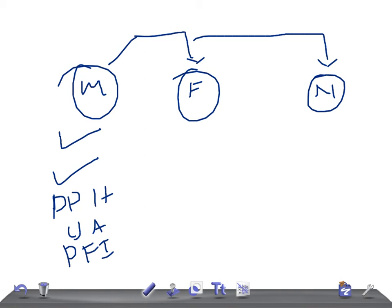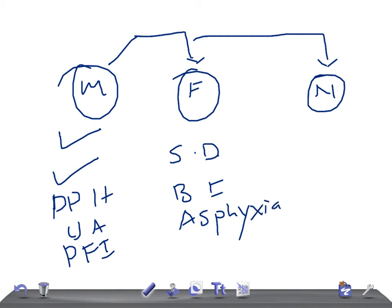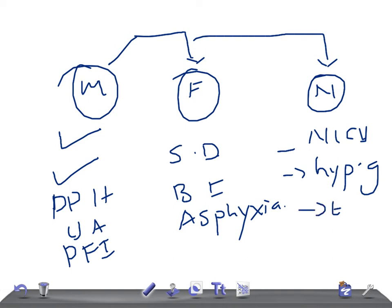Fetal hazards include shoulder dystocia — very important — birth injury, and asphyxia during birth. Neonatal hazards include admission to the NICU, severe hypoglycemia with blood glucose less than 40 mg/dL, and Erb's palsy — brachial plexus paralysis due to injury from shoulder dystocia.